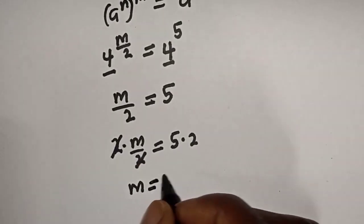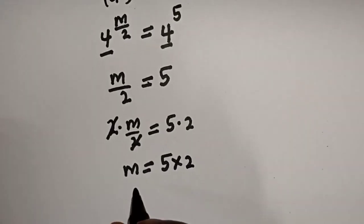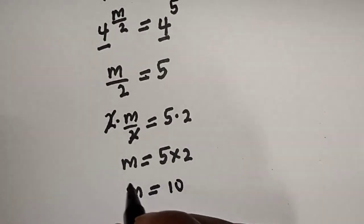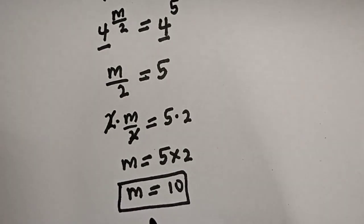m is equal to five times two, and m is equal to 10. And this is the final answer. If you enjoyed the class,